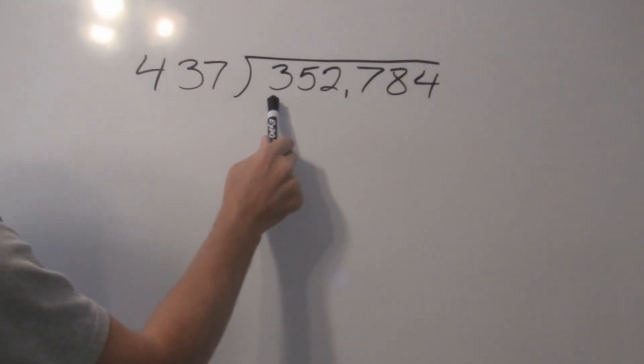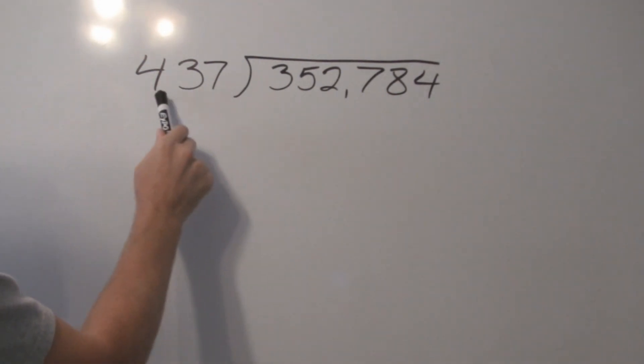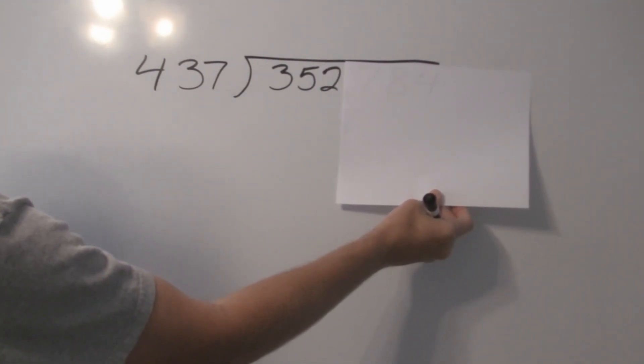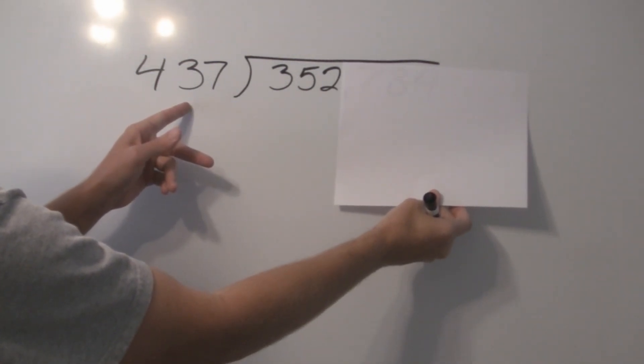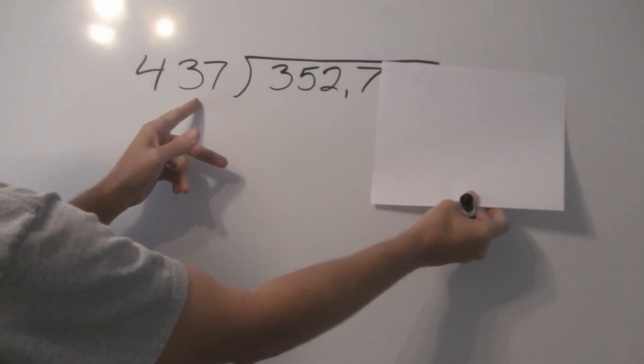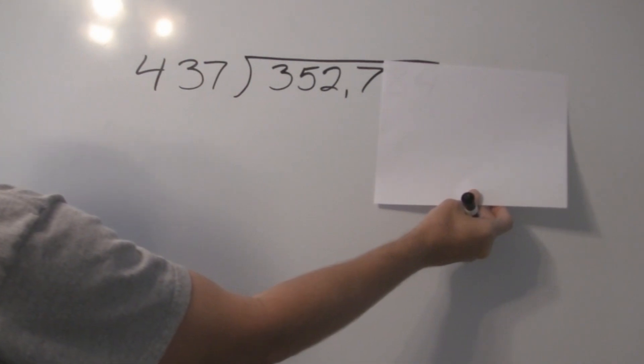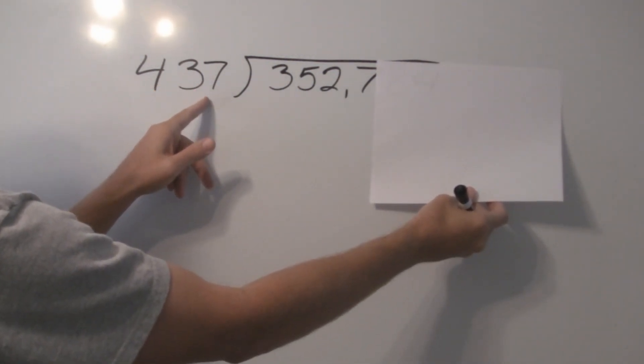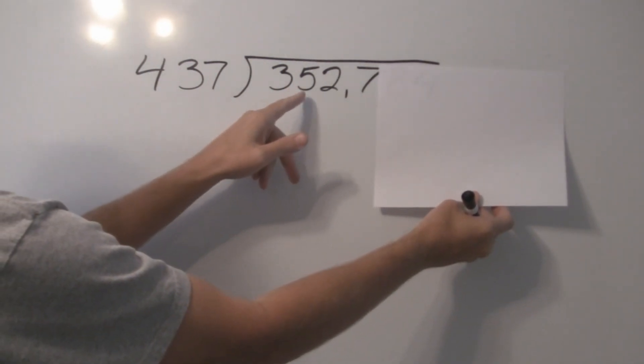437,000 will go into 3? No. Will 437 go into 352? No. It is still too big, isn't it? So, what we are going to do is we are going to try to determine how many times will 437 go into 3527.